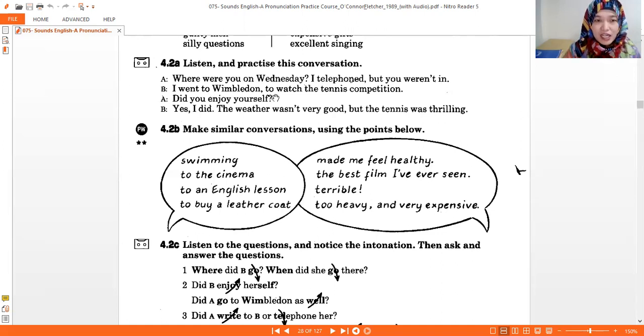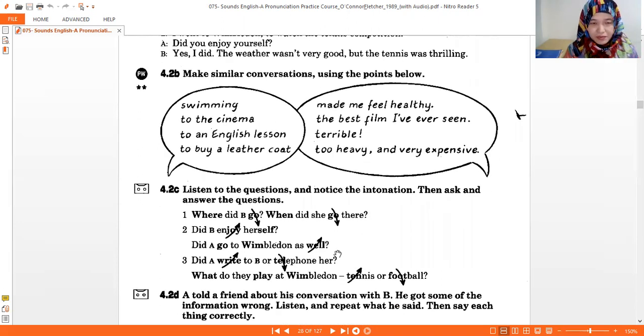And then A again, did you enjoy yourself? B answer? Yes, I did. This one, it made me feel healthy. So in this one, B, you can say directly I went swimming, atau you can also say I went to somewhere, place, ya, tempatnya di mana? For swimming, misalnya, or to watch swimming competition, terserah, boleh. Free. And then you ask again by yourself, did you enjoy yourself? And you answer, yes I did. The weather wasn't, yes I did, it made me feel healthy. Jadi jawabannya yang B ini, jawabannya ada di sini swimming, dan alasannya ini. You can find the other example. You can try the other answer like going to the cinema because the film, the best film I've ever seen. And then to an English lesson, it's terrible. To buy a leather coat, too heavy and very expensive. Ini setiap jawaban yang ada di poin B. This is B yang pertama, B yang kedua. Please practice by yourself.